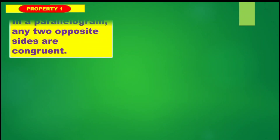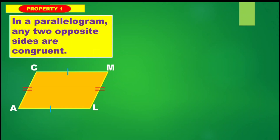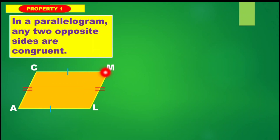Property number one states that in a parallelogram, any two opposite sides are congruent. Just like in our illustration here, we have segment CM opposite to side AL, and side CA opposite to side ML.